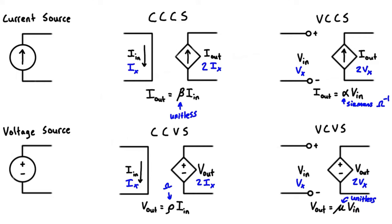When solving these problems, you have to figure out what the controlling voltage or current is for the type of dependent source you have — and usually you're given the multiplying factor. Once you find the controlling voltage or current, you multiply by the multiplying factor to get your dependent voltage or current, and then you can proceed with the problem just as if it were a basic independent source. These acronyms — CCCS, VCCS, CCVS, VCVS — are good to remember. I'll see you in the next videos where we'll go over one example for each of these.